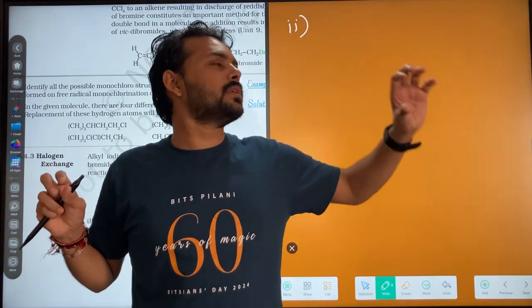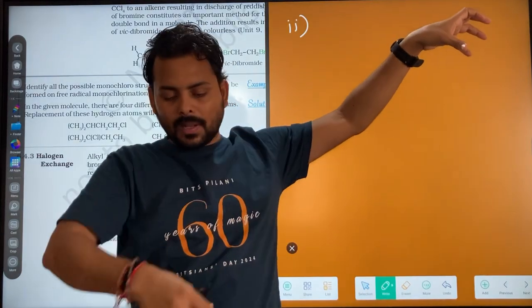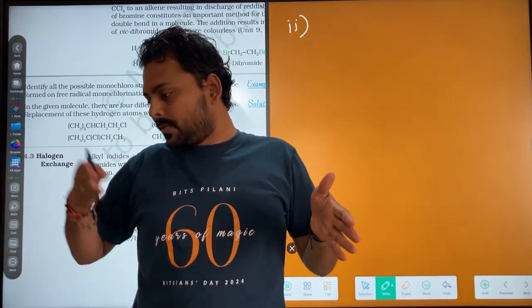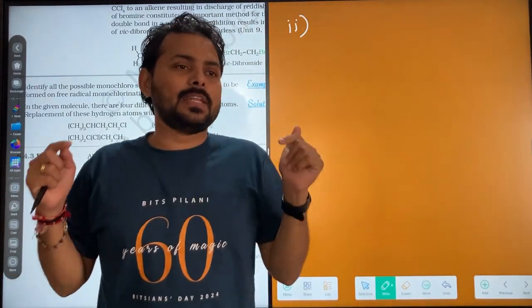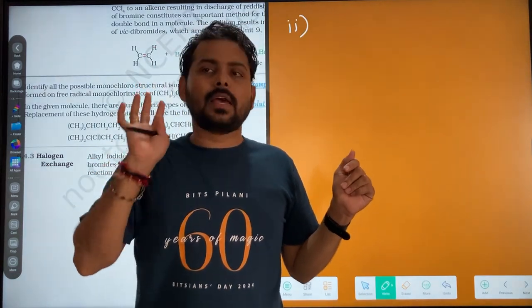क्योंकि कभी ऐसा होगा कि यहां पर एक नंबर carbon है, वहां bromine लगा, फिर उसके पहले लगा, उसके लास्ट वाले पर लगा। तो वह भी दो नहीं हुआ। यहां तो दोनों name same हो जाएंगे। तो जिसके दोनों IUPAC name same हो जाएंगे, तो वो दोनों दो isomers नहीं है, वह एक ही isomer है।